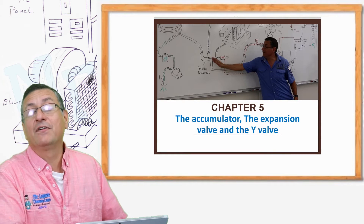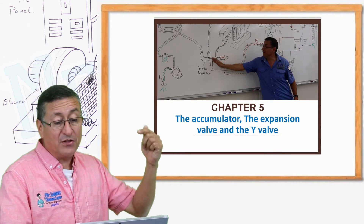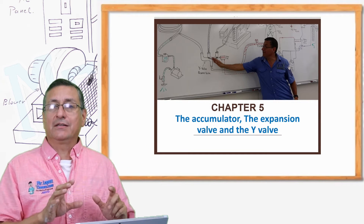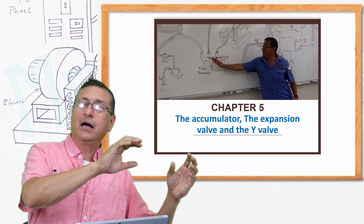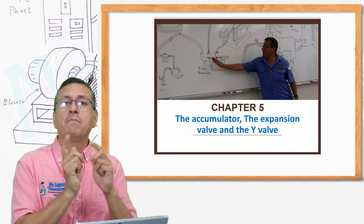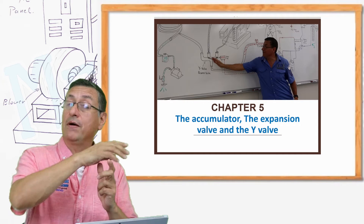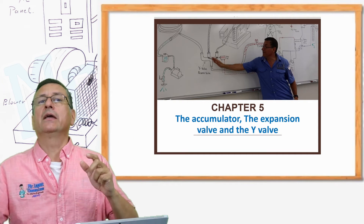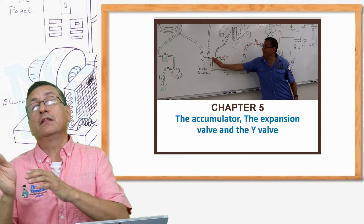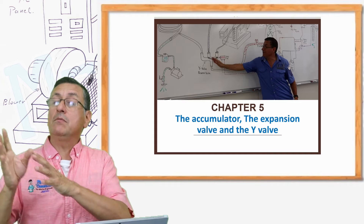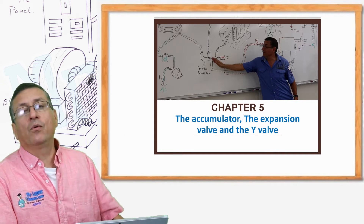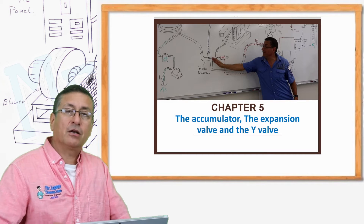In chapter number five, we are going to analyze the accumulator, the expansion valve, and the y-valve. With the y-valve, we can produce the cycle of cooling and heating, because that magic valve sends the refrigerant to the evaporator or to the condenser. Depending on where the refrigerant is going, you have a heating mode or cooling mode — and this is possible with the y-valve. We are going to analyze the y-valve in chapter number five.